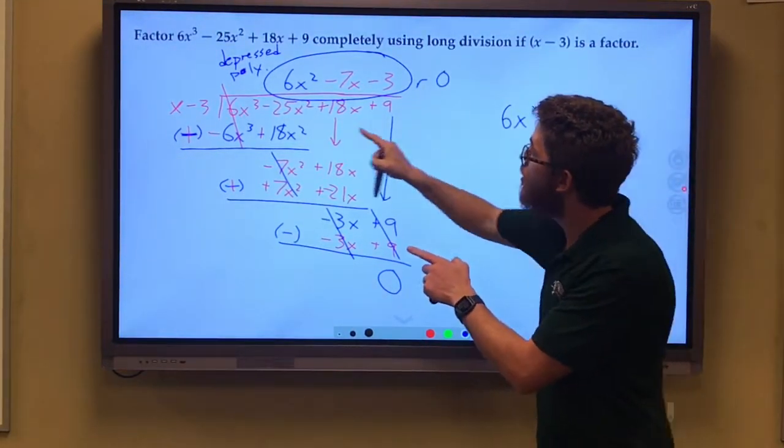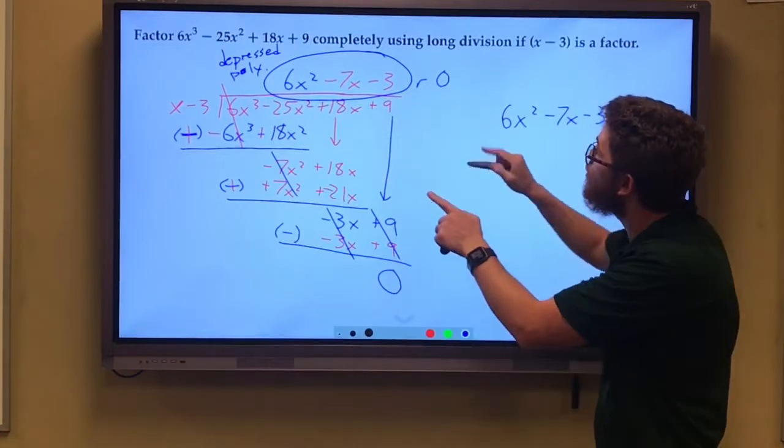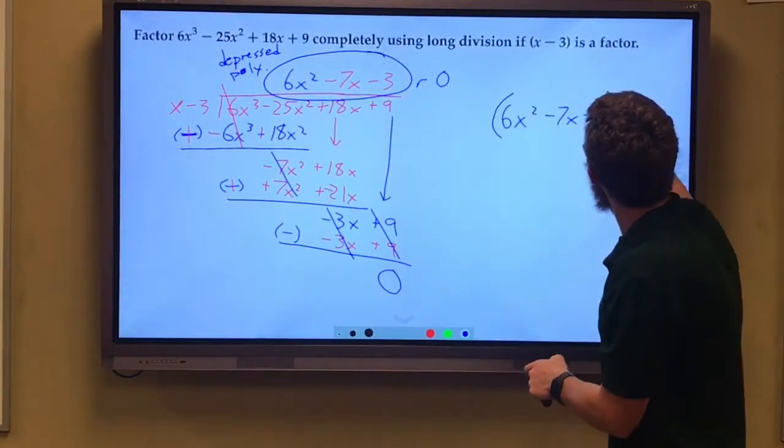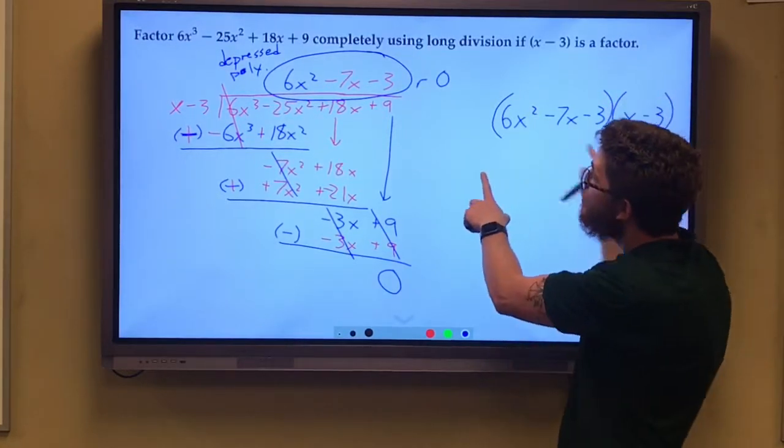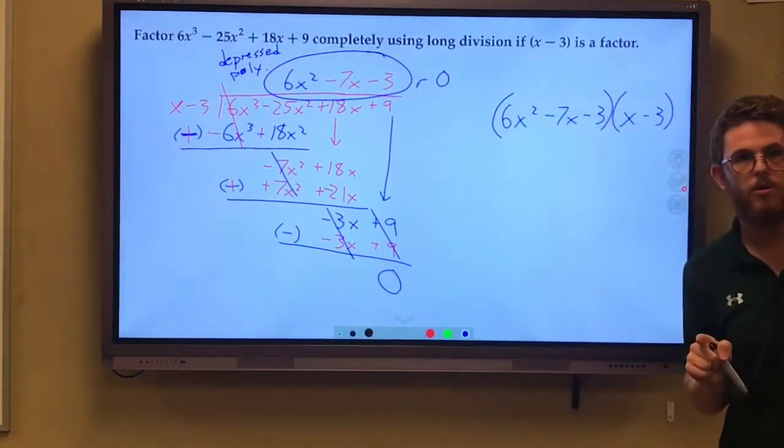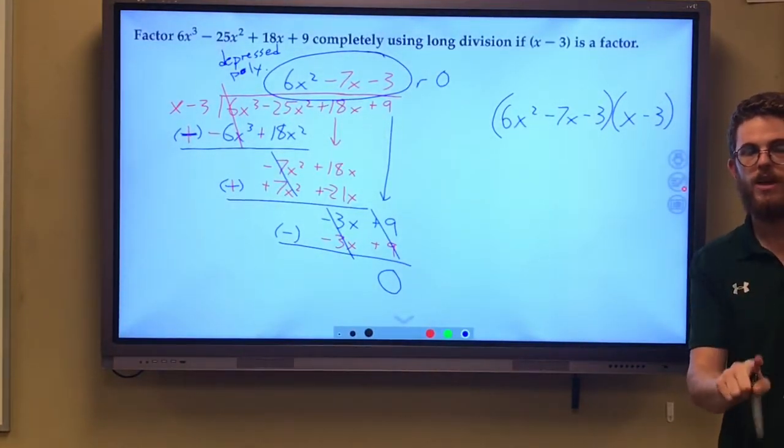We now know that x minus 3 was a factor of that original. So we know that this times x minus 3 gives us that original polynomial. I hope you followed that.